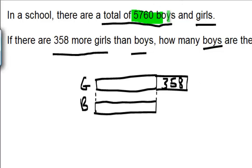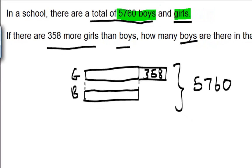There are a total of 5760 boys and girls, so all of this will add up to 5760. As you can see here, these two units and 358 is equal to 5760.